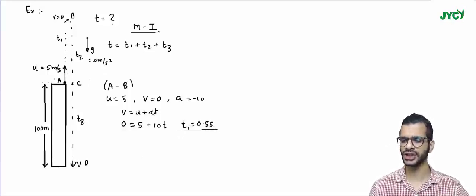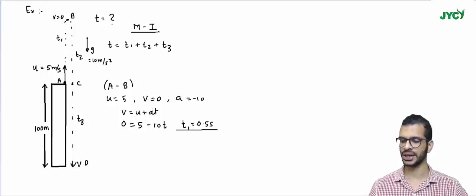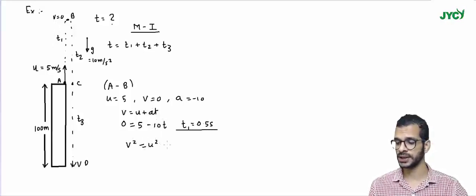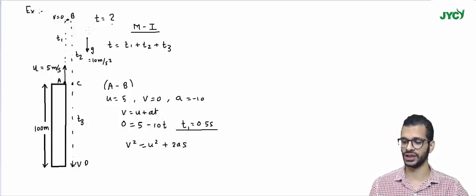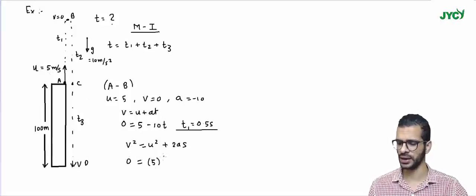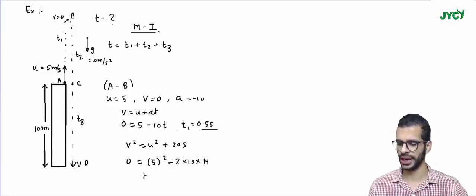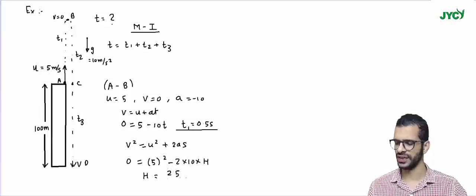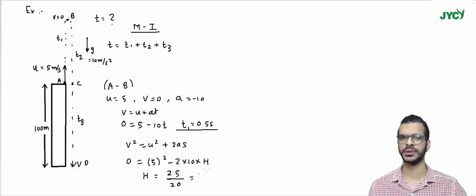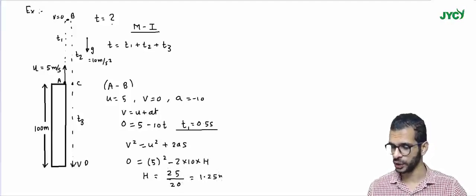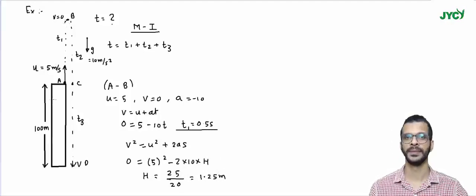Now let's also calculate the maximum height H above the building that the ball reaches. Using v² = u² + 2as: final velocity is 0, initial velocity is 5, so 0 = 25 − 2 × 10 × H. Therefore H = 25 divided by 20, which equals 1.25 meter. So the ball goes 1.25 meter above the building top.